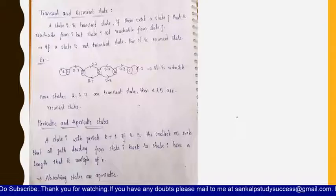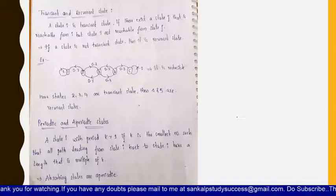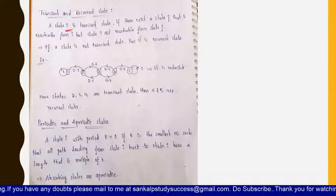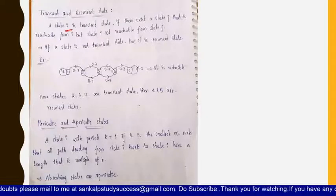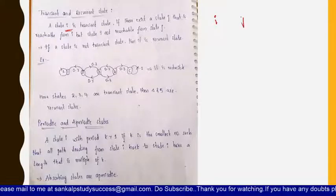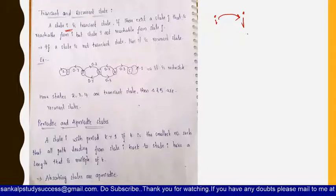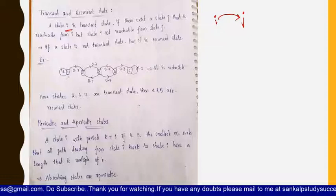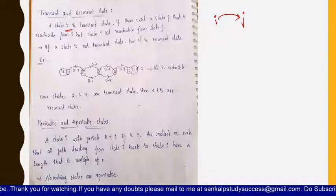Now coming to transient and recurrent states. If we learn the transient state, the exactly opposite of it is the recurrent state. A state i is a transient state if there exists a state j that is reachable from i, but i is not reachable from j. That means from i to j there is a path, but there is no path from j to i in reverse. For example, from state two there is a path to one, but there is no path from one to two — so two is a transient state.